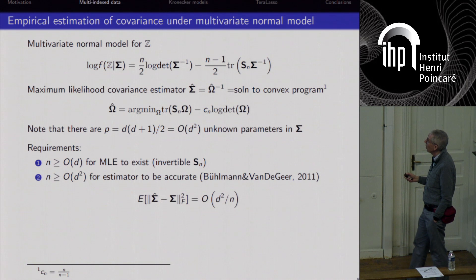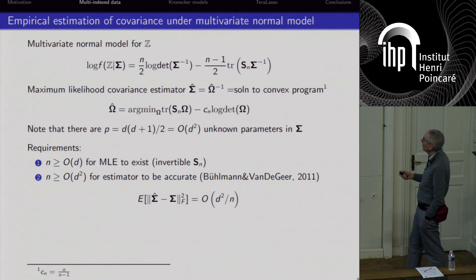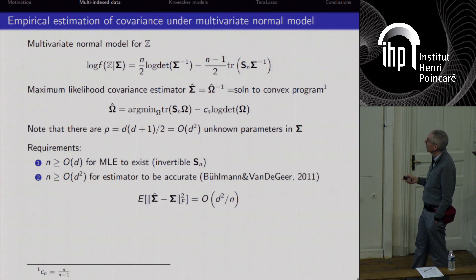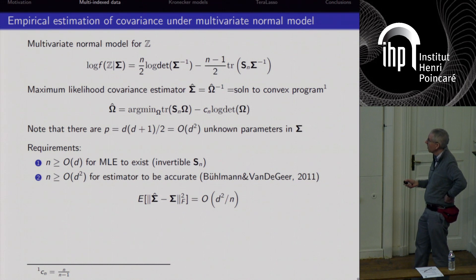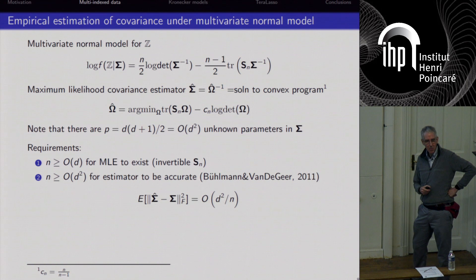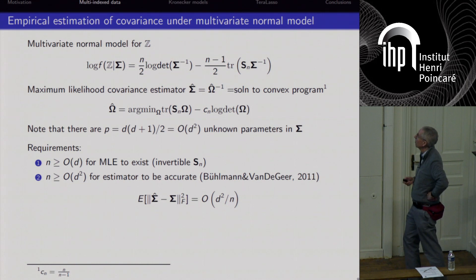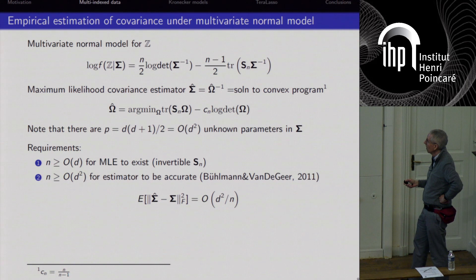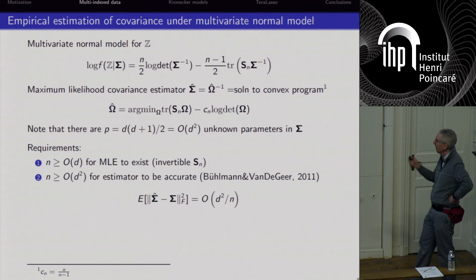There are on the order of d-squared unknown parameters — the d times d plus 1 over 2 elements of the d-dimensional covariance matrix. Without further constraints, we require at least order of d measurements — a K-fold product of all underlying dimensions — for the MLE to exist. More precisely, even if N is greater than d, we need N on the order of d-squared for the Frobenius norm error to be small, on the order of d-squared over N.